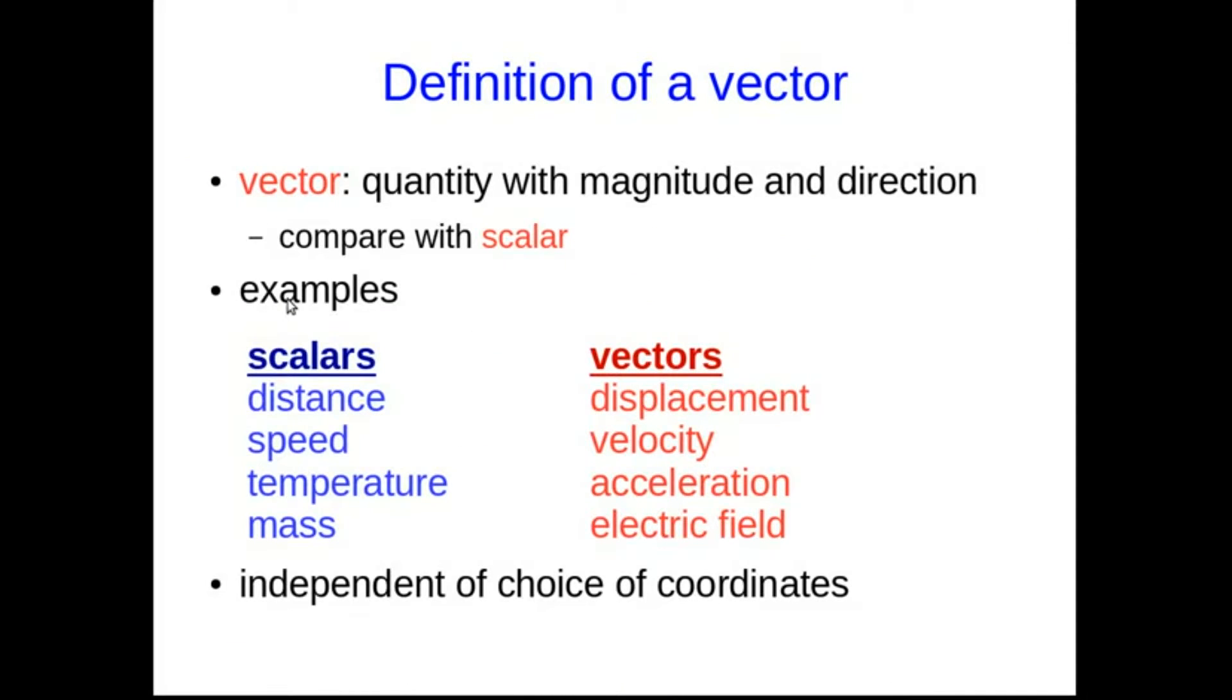So a vector is a quantity that has both magnitude and direction. The magnitude is what we call the size of the vector, and compare that with a scalar that has magnitude only. So distance and speed are scalars, displacement and velocity are vectors.